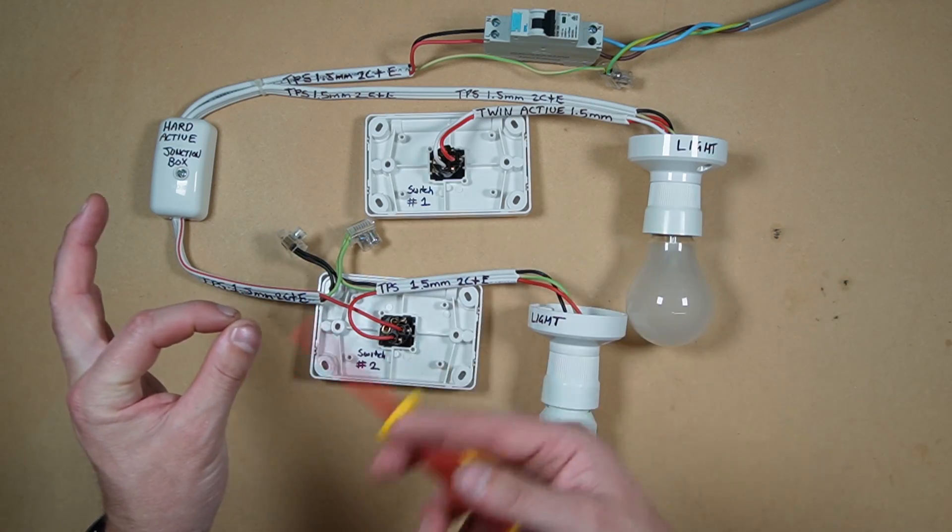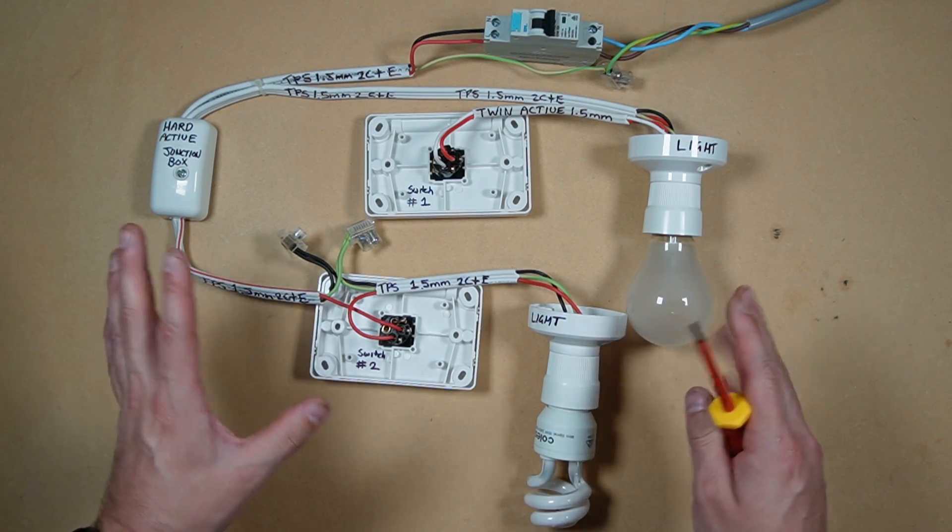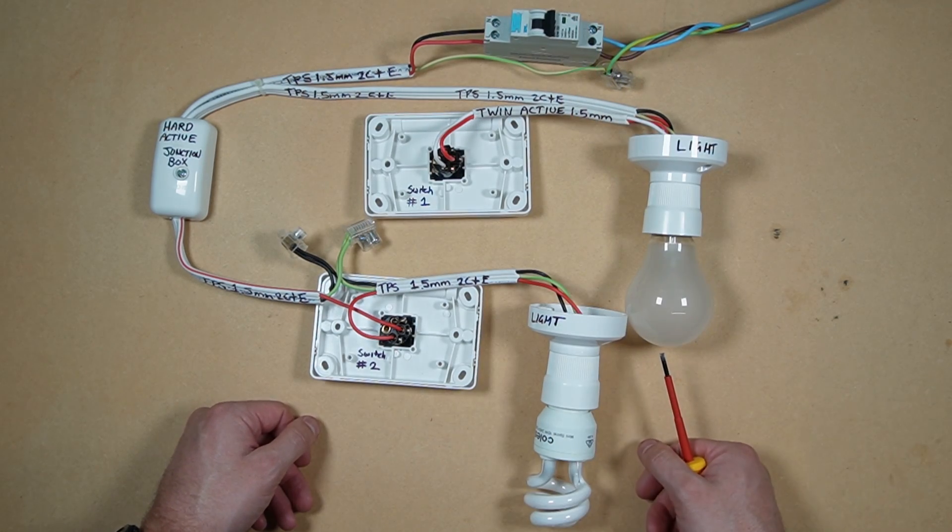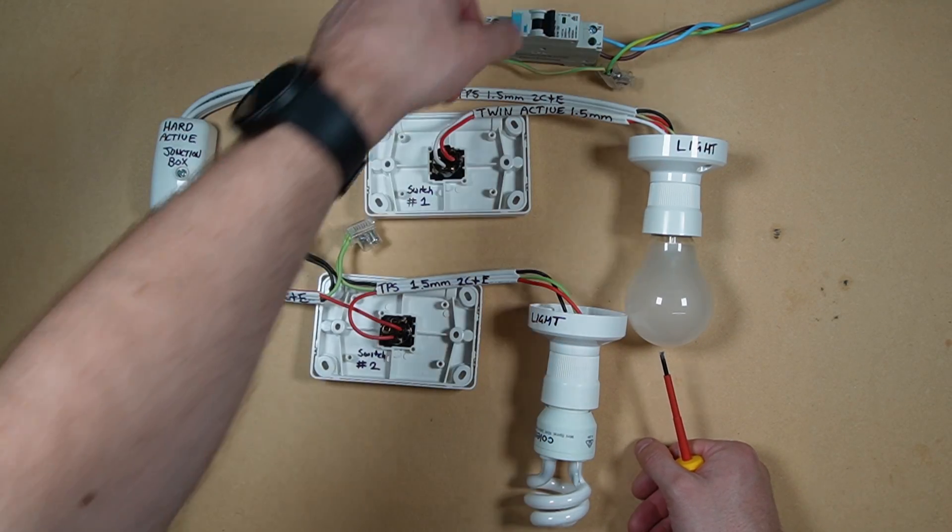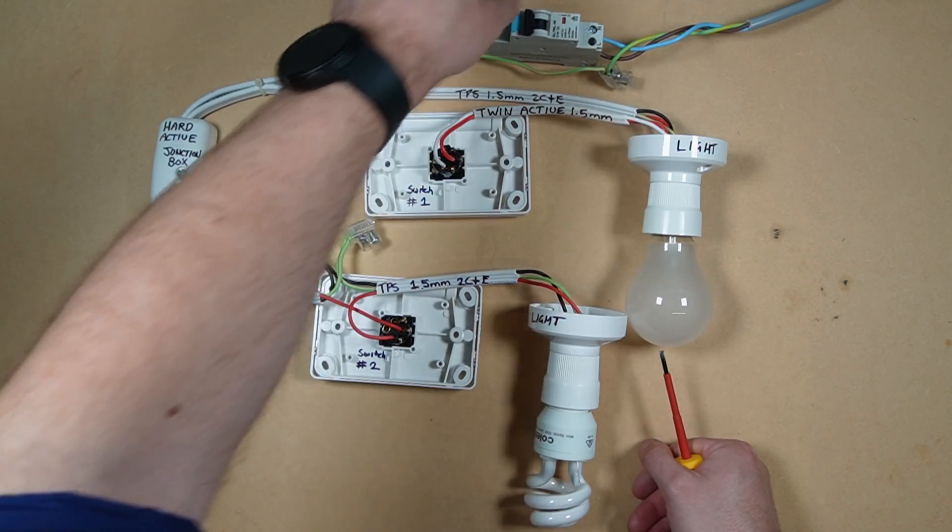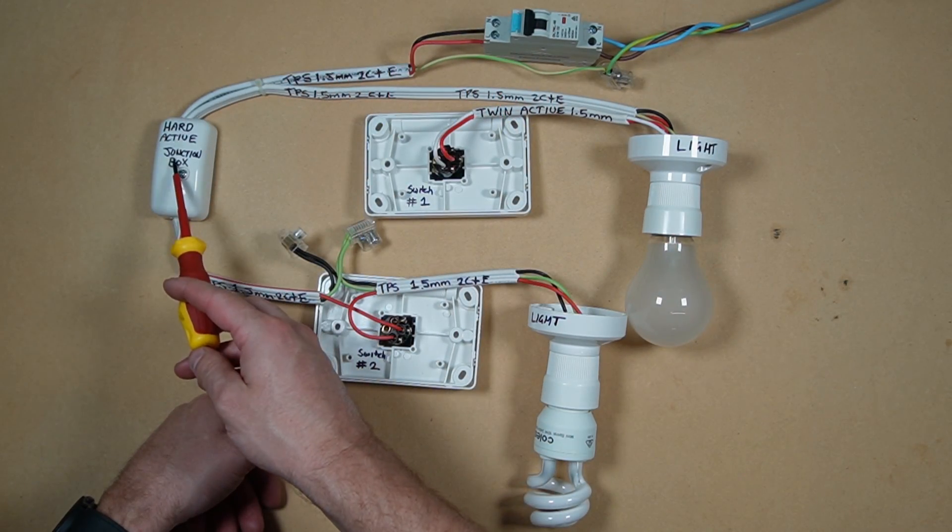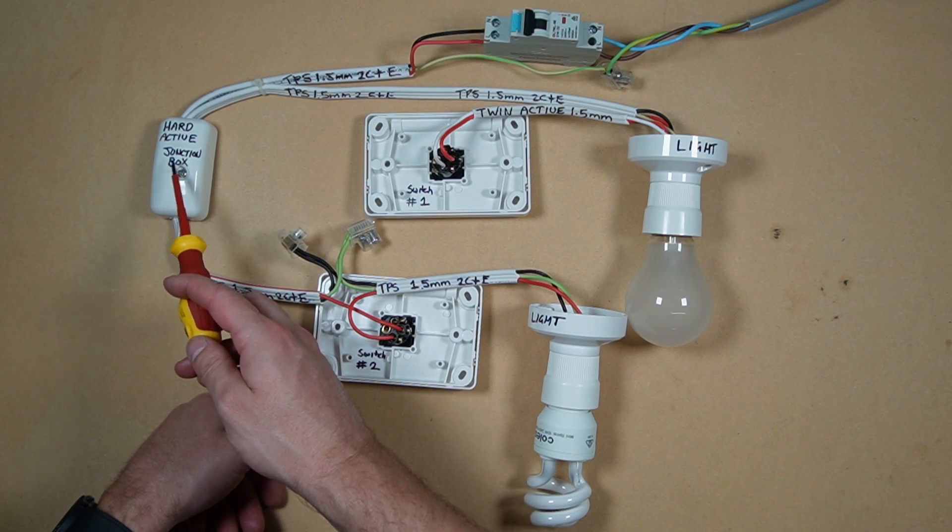So let's get started. How does both methods work? So let's turn on our RCBO at our switchboard. That gives power through to our junction box, which I've just used to join both our methods, the hard active for both our methods.